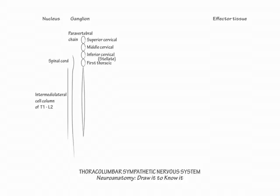The somatotopy of these ganglia is fairly broad. Fibers from the rostral intermediolateral cell column synapse in rostral ganglia, and fibers from the caudal intermediolateral cell column synapse in caudal ganglia.